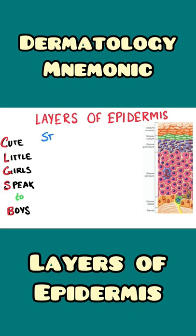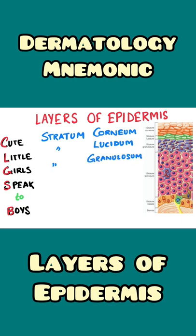The C represents stratum corneum, L represents stratum lucidum, G represents stratum granulosum, S represents stratum spinosum. The T in 'to' doesn't represent anything, and the B in boys represents stratum basale.